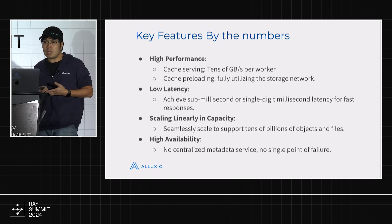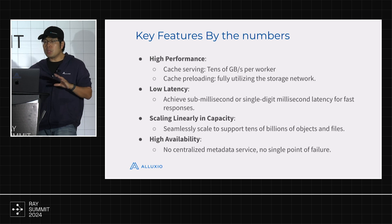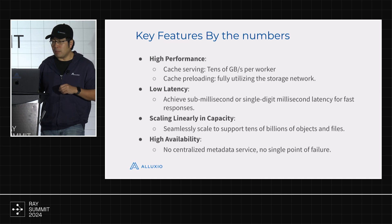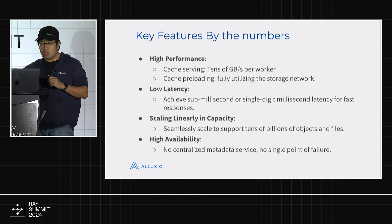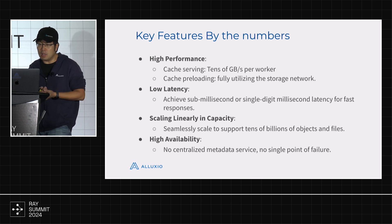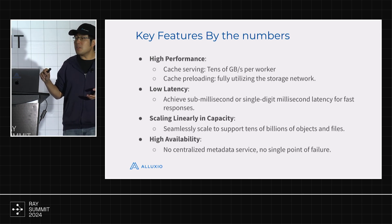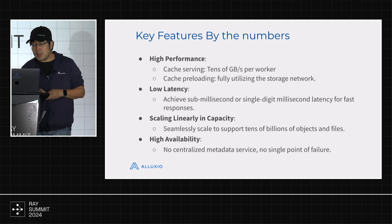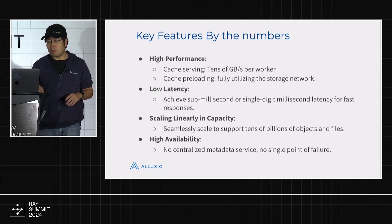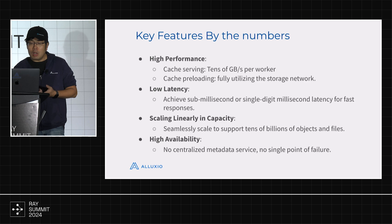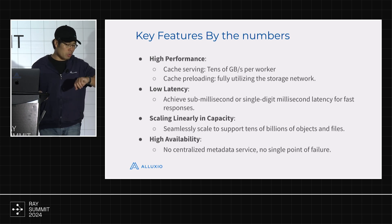Key features by the numbers: tens of gigabytes per worker, and because of consistent hashing you can scale total system throughput by adding more workers almost linearly. We can fully utilize the storage network to load data. For latency, we've seen sub-millisecond to single-digit millisecond latency, compared to S3's typical 100 milliseconds — two orders of magnitude better. Capacity scales linearly by just adding workers via consistent hashing, supporting tens of billions of objects and files — super important for today's ML workloads. High availability: no single point of failure, no centralized metadata service, so model training jobs can succeed even when running for multiple days or weeks.